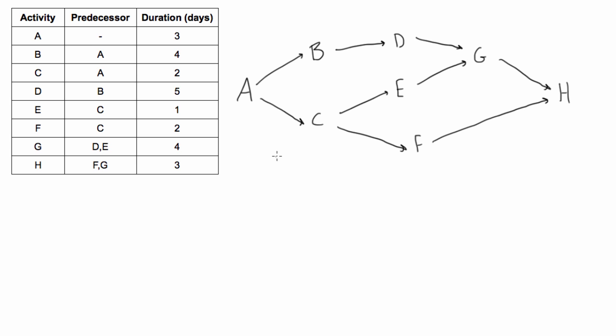But in order to do this properly, we will need to change the nodes here. Instead of just being arrows, we will be using these little squares that we used in the previous video. Because we will have to have more information in them than just the letter, the name of the activity.